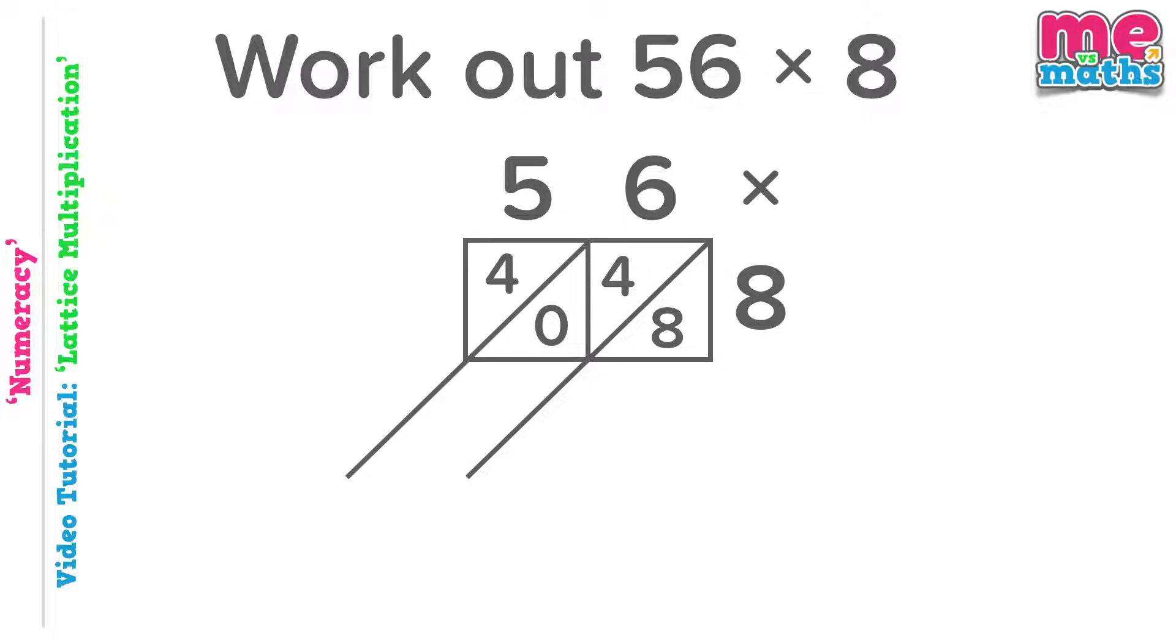Now as with other methods of long multiplication, we now need to do a bit of adding up at the end. But we're going to add up in a slightly strange way. We're going to do it in diagonal columns starting from the right hand side. In our first diagonal we've just got 8, so the total for this column is just 8. Our next diagonal column has a 4 and a 0 in it. If we add the 4 and the 0 together we'll get a total of 4. And last of all this diagonal, it's only got one number in it again, just a 4, so the total of that column is 4. We've got our answer now of 448, and that is an example of the lattice method done.